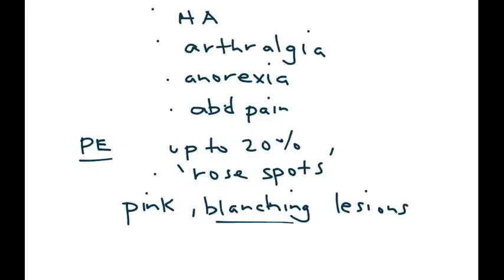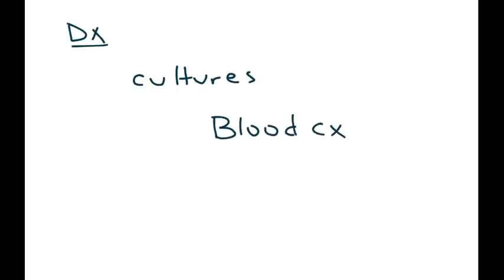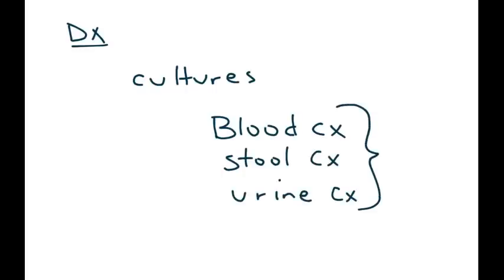Another characteristic finding that can help you reach a diagnosis is the spleen being enlarged — splenomegaly. Diagnosis involves cultures: blood culture, stool culture, and urine culture, which will help you identify the organism Salmonella typhi.